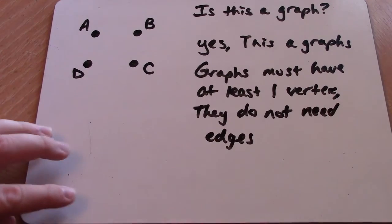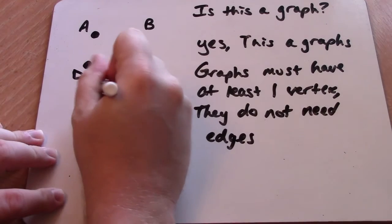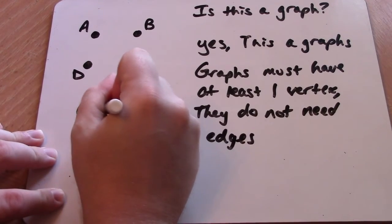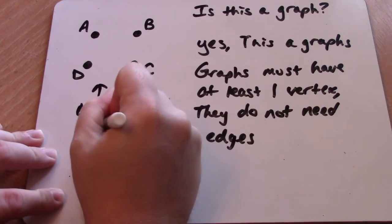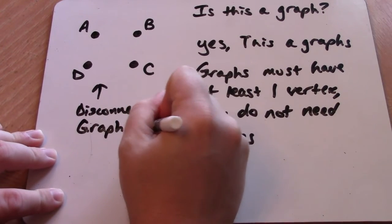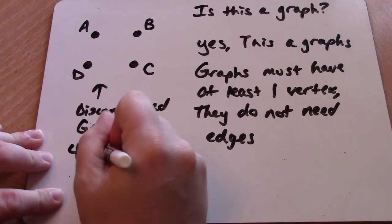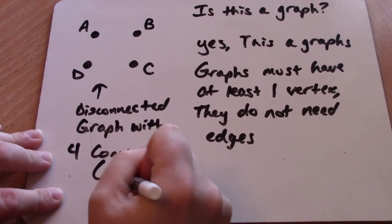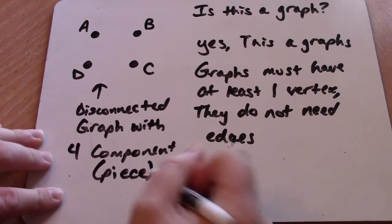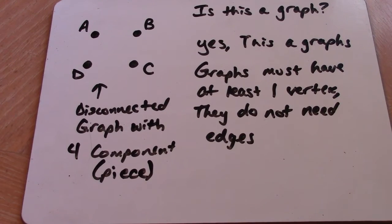So what we have here is a disconnected graph with four components. That is four pieces. Each piece of a disconnected graph is known as a component.